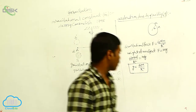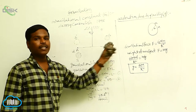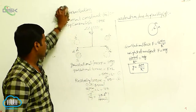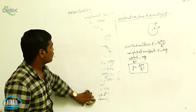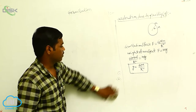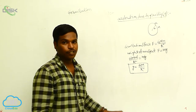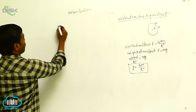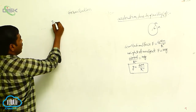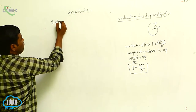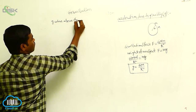Now, the acceleration due to gravity — how it is changing? This acceleration due to gravity is changing from place to place. Now we look at the g value above the surface of the Earth.